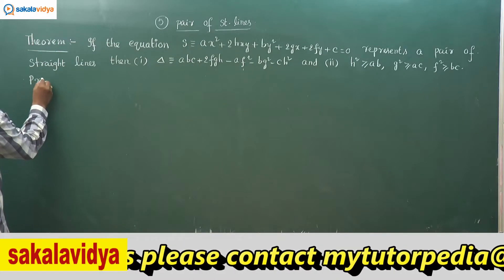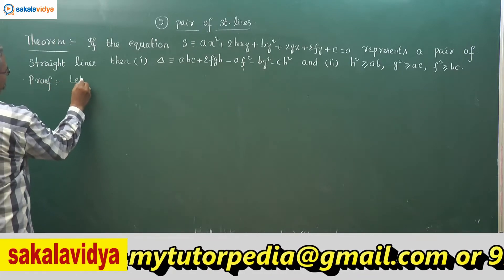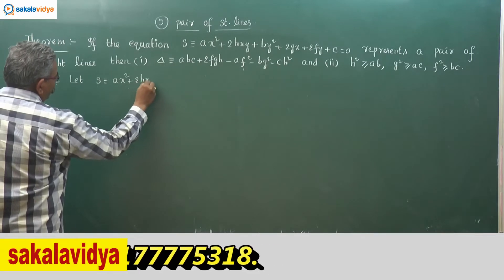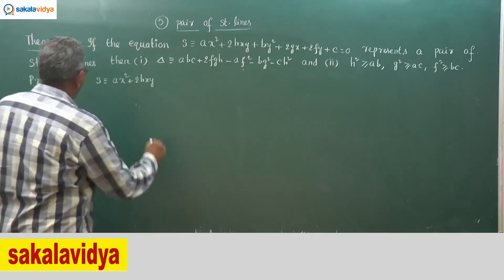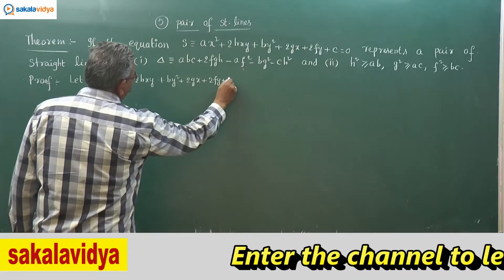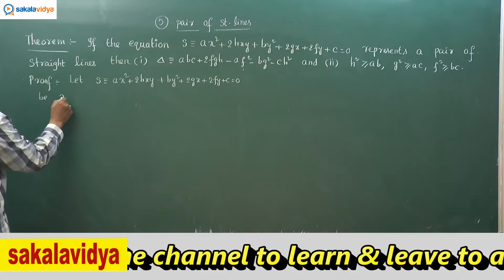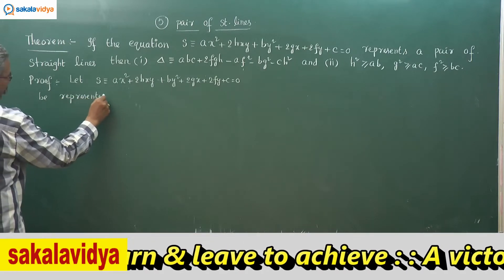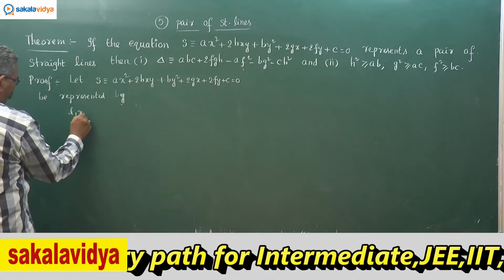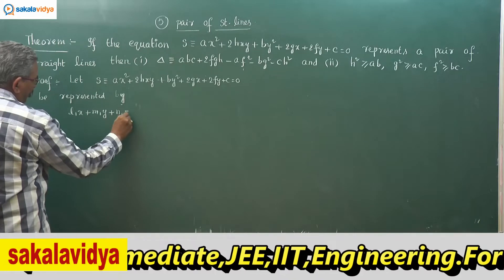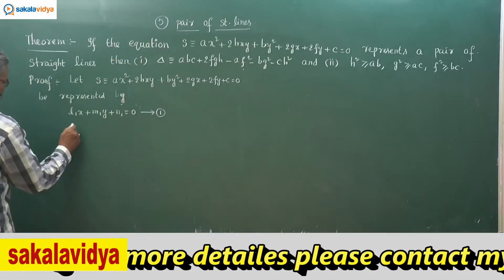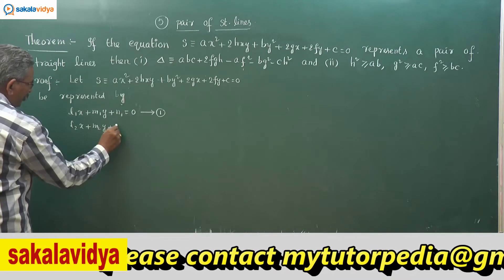Now the proof follows. Let S = ax² + 2hxy + by² + 2gx + 2fy + c = 0 be represented by two lines: l₁x + m₁y + n₁ = 0, since it does not pass through the origin, and l₂x + m₂y + n₂ = 0.